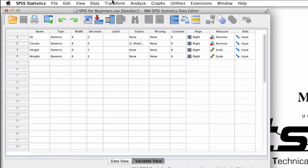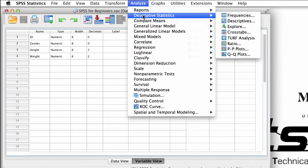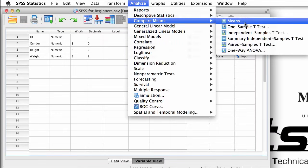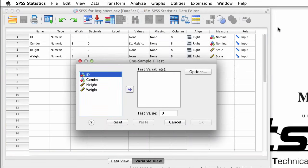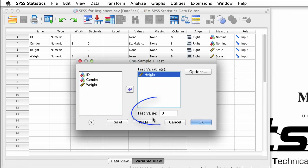Go to Analyze, Compare Means, One Sample T-Test. A window pops up, just like we have seen before. We will move our variable height into the test variables box. We can do that with the arrow or just by dragging it over.